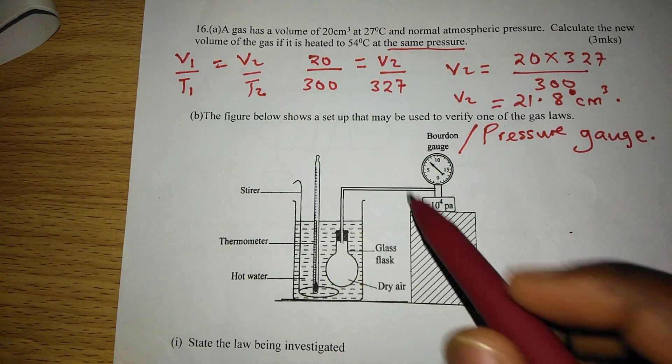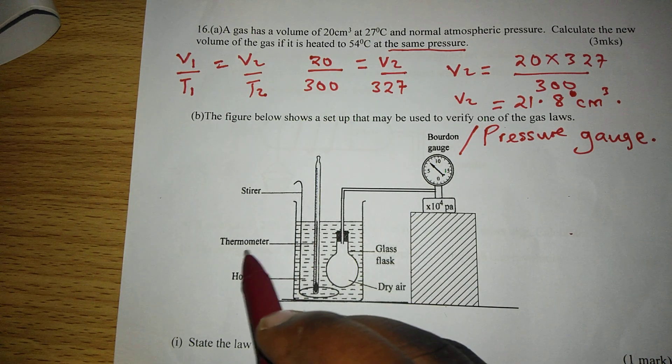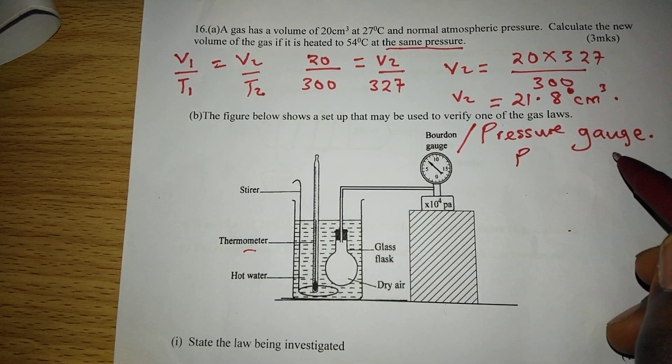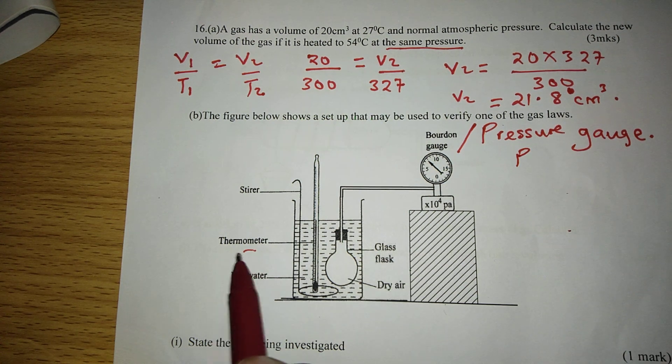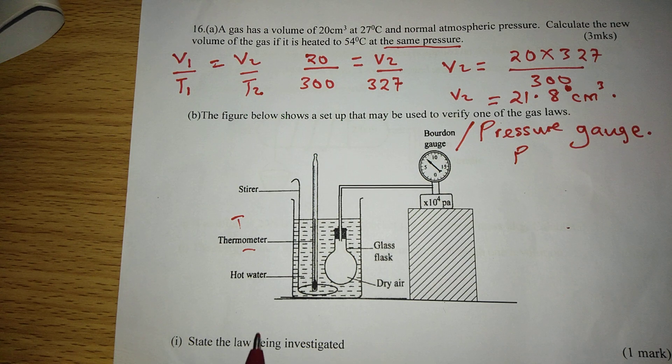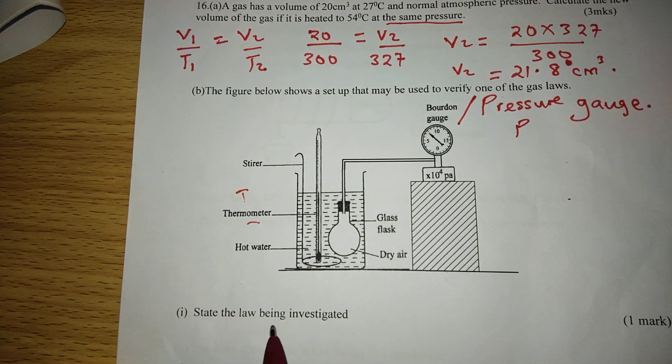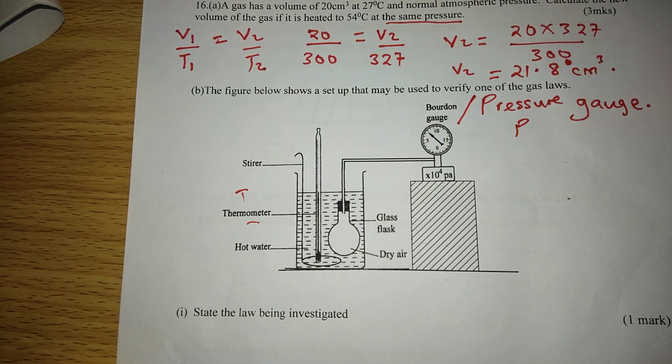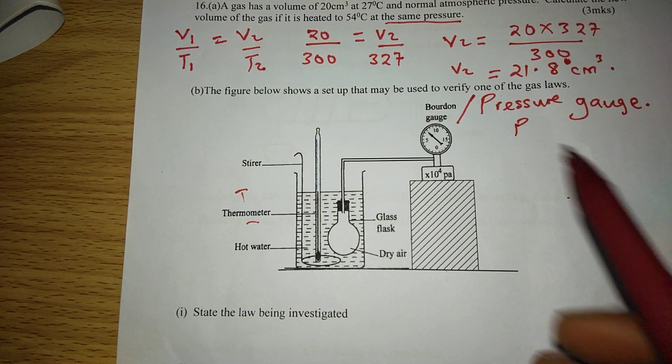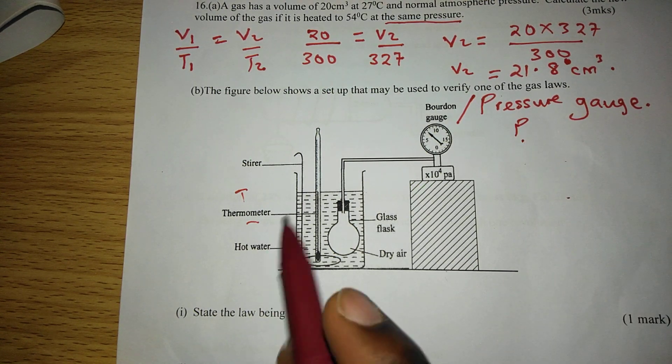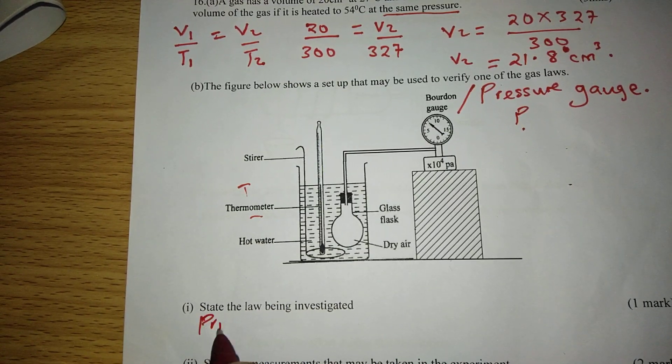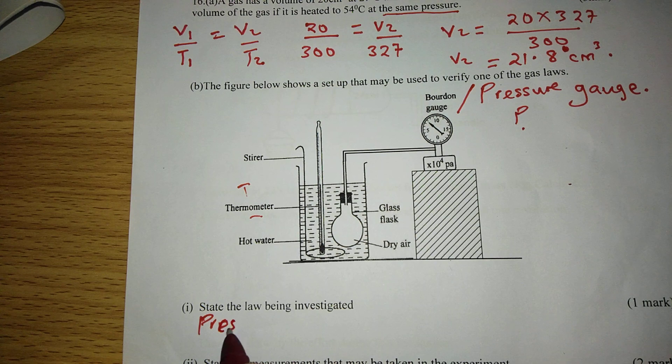Then again, we have a thermometer here. So when we see pressure gauge, it's for measuring pressure. When we see a thermometer, it's for measuring temperature. So now, when we are told to state the law being measured or being investigated, this law is the law that relates pressure and temperature. And it is none other than the pressure law.